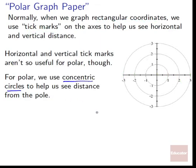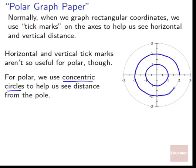The first circle is at a distance of 1 — anything on this circle is a distance of 1 from the pole. The next one is at a distance of 2 from the pole. That way we can easily see how far you are by seeing which circle you're on. It's like tick marks, but for how far you are from the center of the graph — it works really well for the r in polar coordinates.